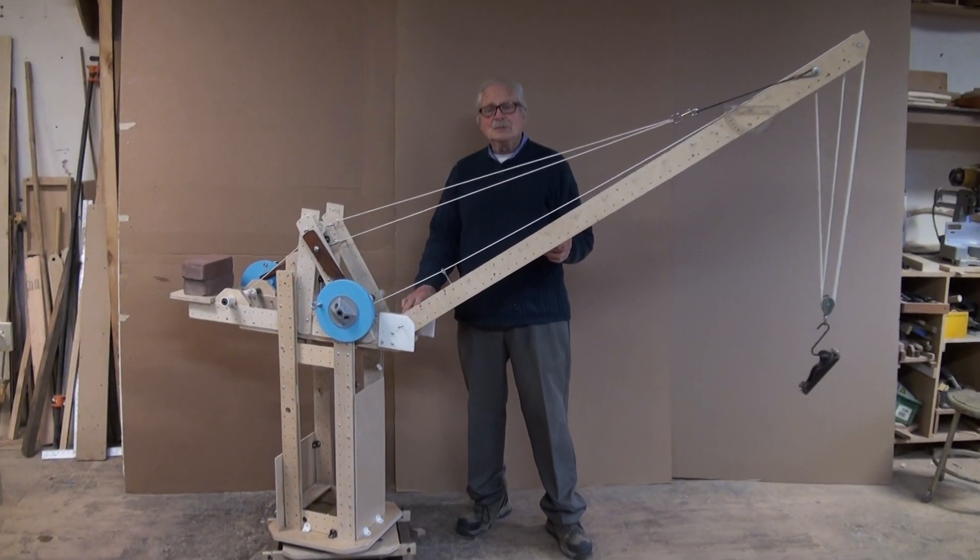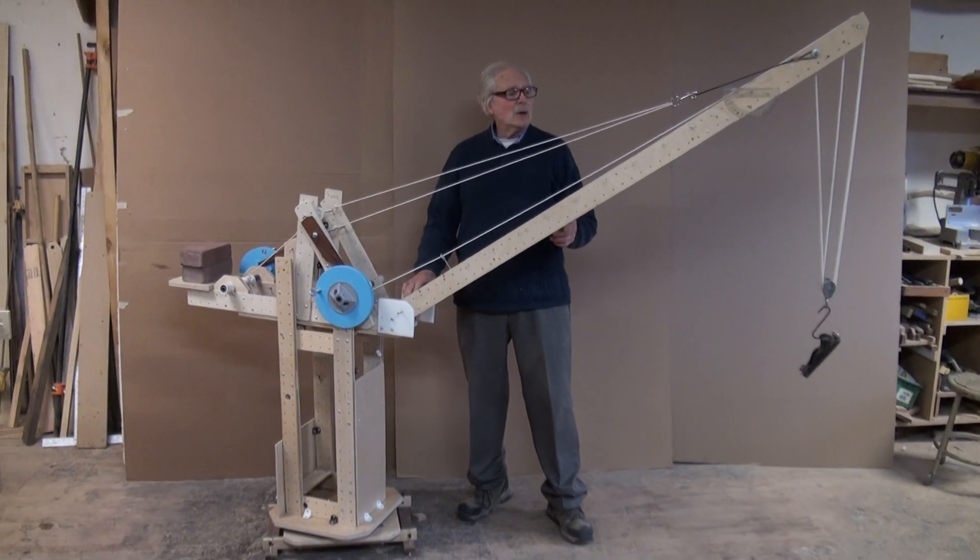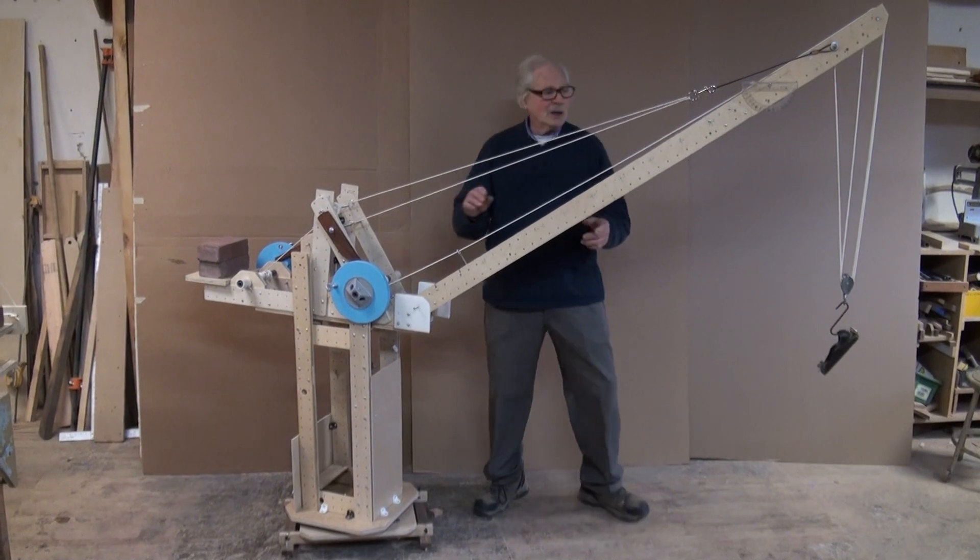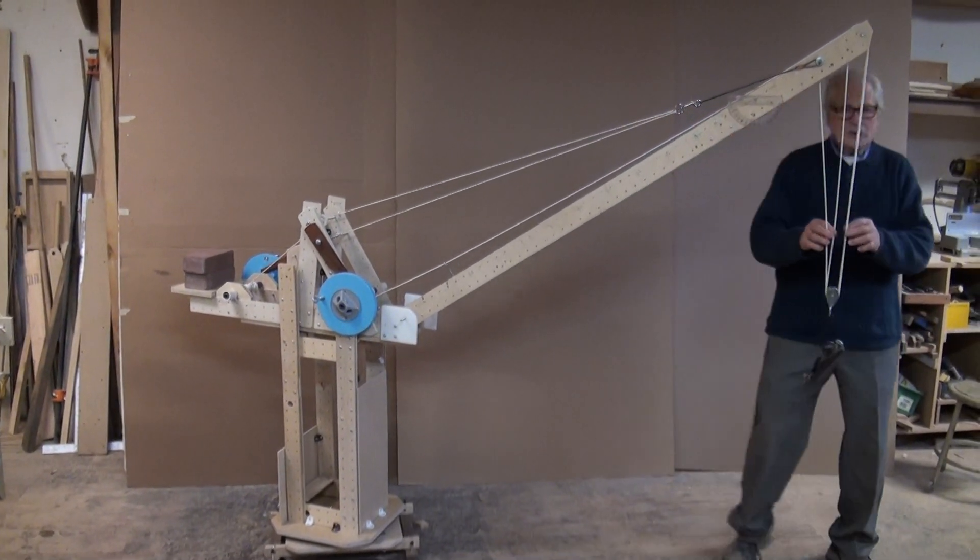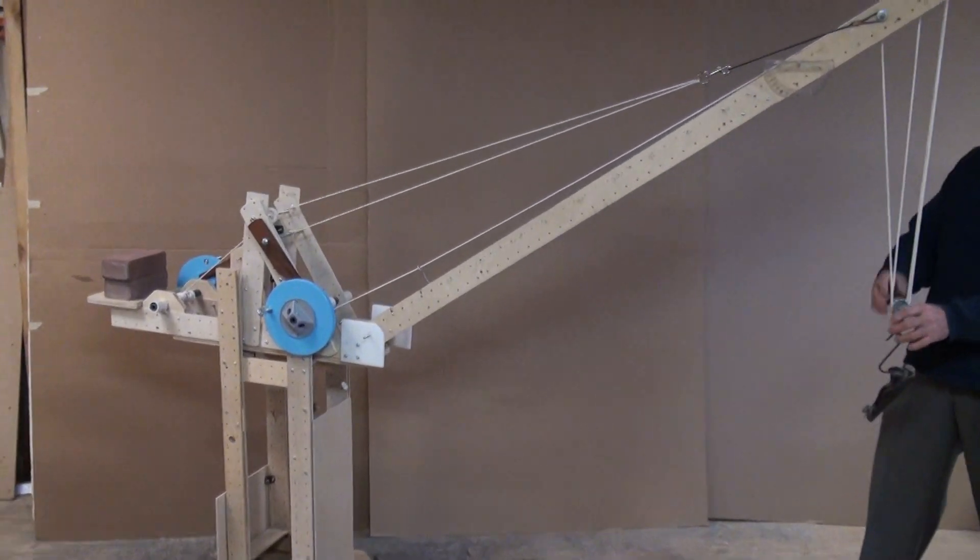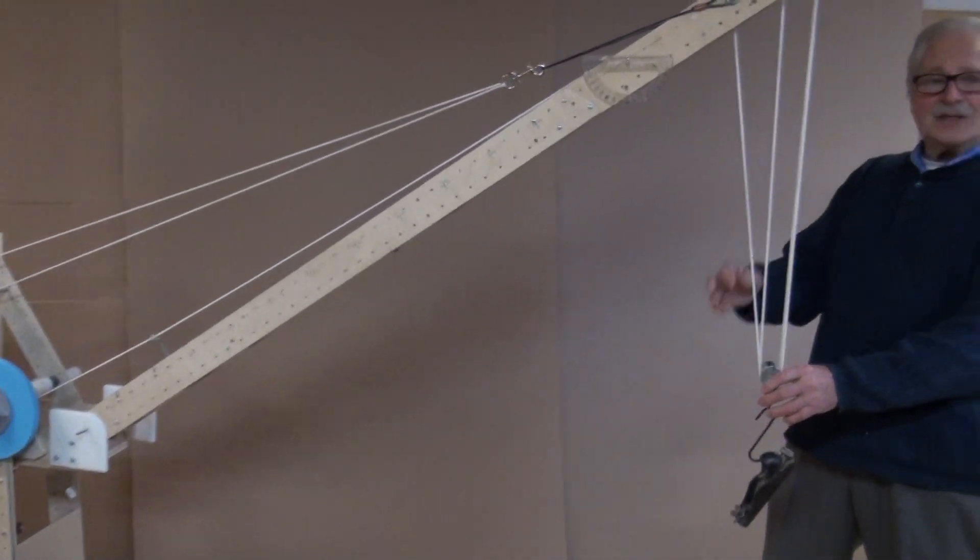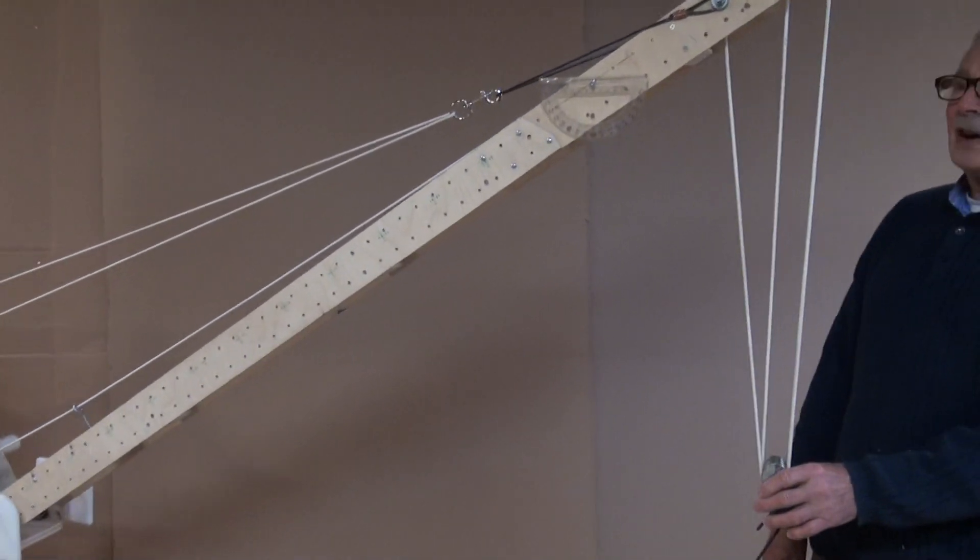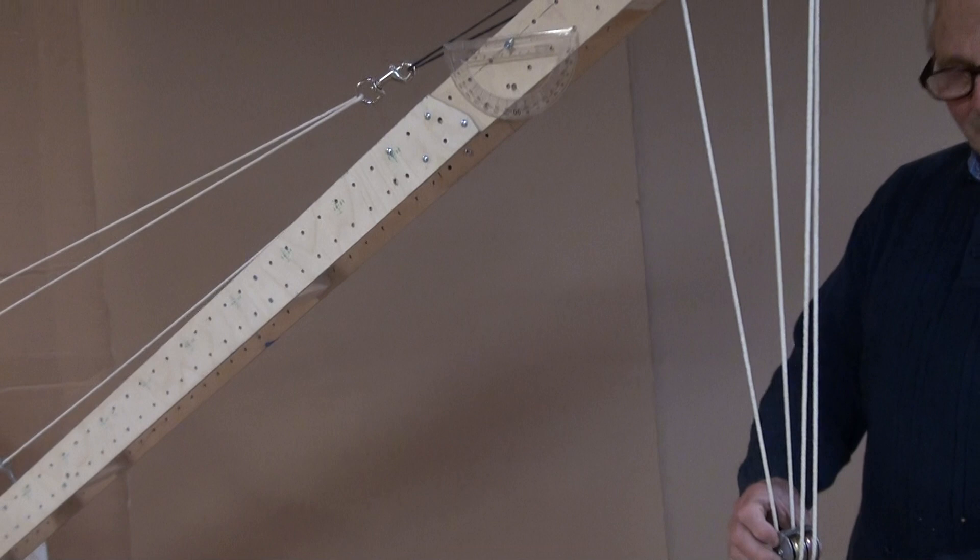So this is the Leffing jib tower crane again. Now I want to talk about all the lines that are holding up the load. This is called four parts of line because it's one line but they call it four parts with a double shiv pulley here.